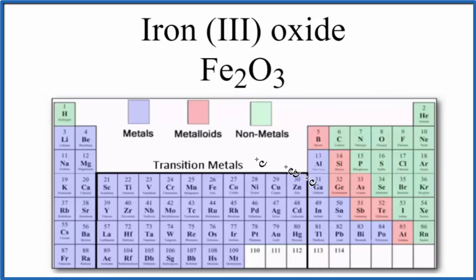So one way we could do this we could look at the periodic table. We find iron that's a metal and oxygen that's a non-metal. When we have a metal and a non-metal that is usually considered to be an ionic compound.